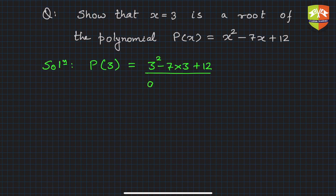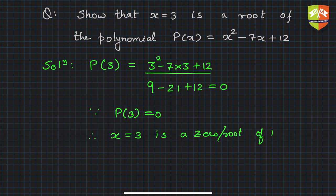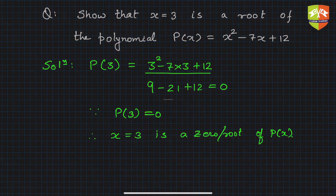Since P(3) is 0, you should write: since P(3) is 0, therefore x equals 3 is a zero or root of P(x). So with these two examples, I think now it's clear how to find out or how to show whether some variable value is the root of a given polynomial.